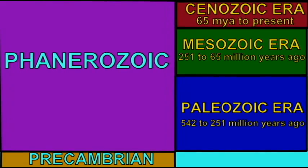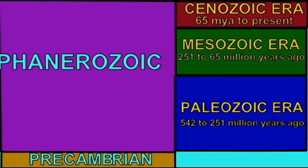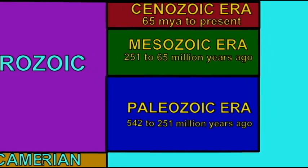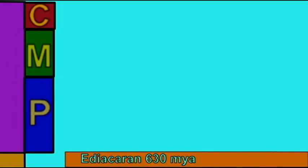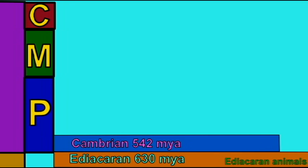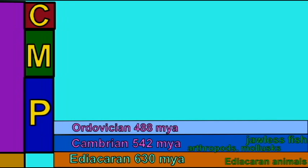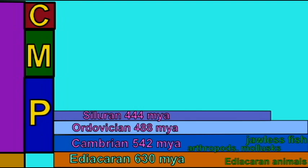Planet Earth is very old. For the overwhelming majority of Earth's history, not a single arthropod fossil is known. As far as can be determined, arthropods did not exist for almost all of Earth's history.